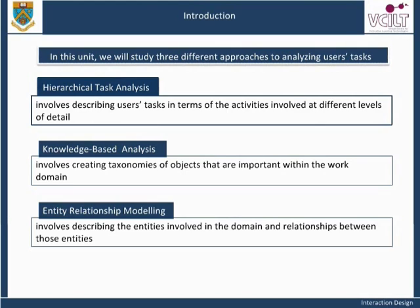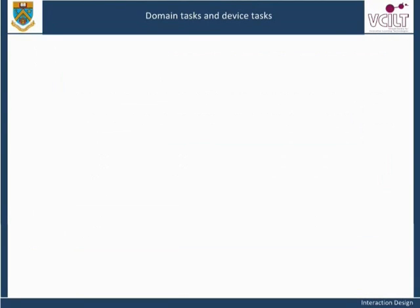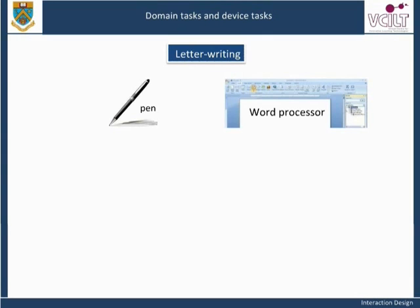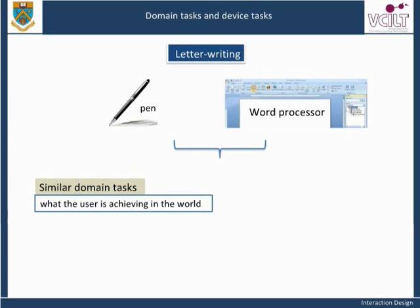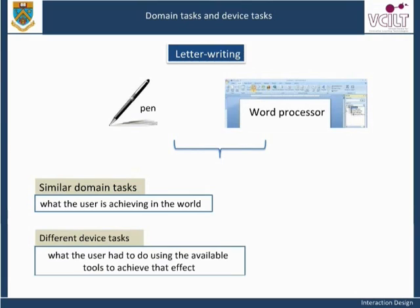We will focus most on HTA. In the discussion of letter writing, we saw that very similar end objectives could be achieved in very different ways, using different tools — pen, or word processor plus printer. The two scenarios described similar domain tasks — what the user is achieving in the world — but involved different device tasks — what the user had to do using the available tools to achieve that effect. One of the most important challenges of design is often to ensure that there is a good fit between the domain tasks and the device tasks.